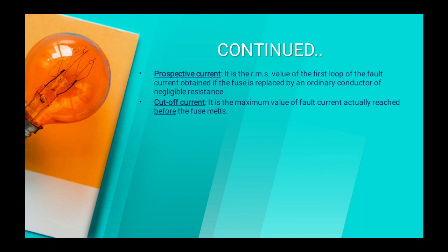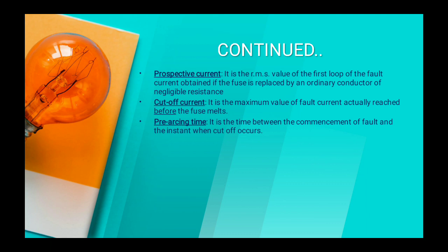Cut-off current. It is the maximum value of fault current actually reached before the fuse melts. So before melting of the fuse, the maximum value of current — after the cut-off current is exceeded, the fuse gets melt. Pre-arching time. It is the time between the commencement of fault and the instant when cut-off occurs. That is the time between when the fault occurs and the instant when the fuse melts.